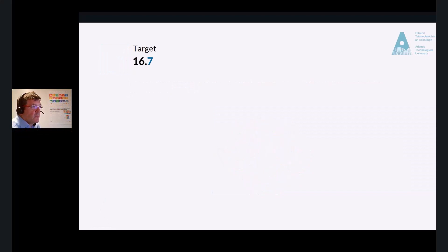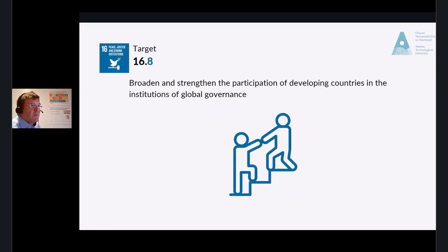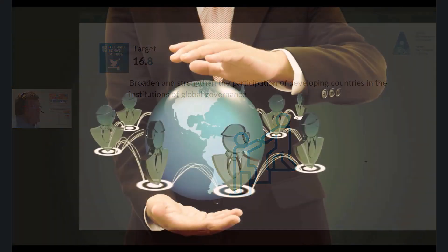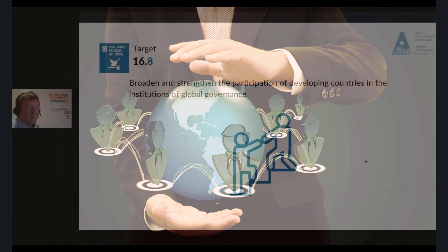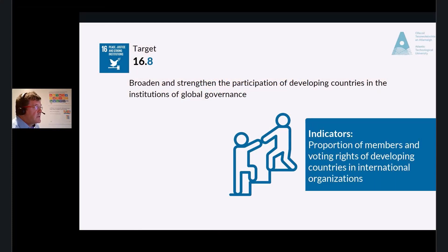Target 16.8: Broaden and strengthen the participation of developing countries in the institutions of global governance. If you're talking about equality, this is an exceptionally important target. It is important to have marginalized community members at the decision-making table. At a global level, we cannot make effective global decisions if all countries are not fairly represented. The indicator for this target is the proportion of members and voting rights of developing countries in international organizations.